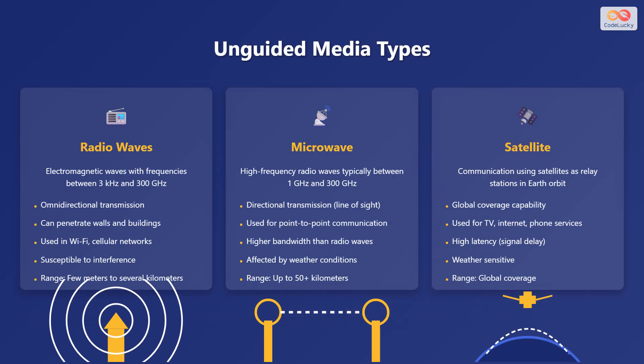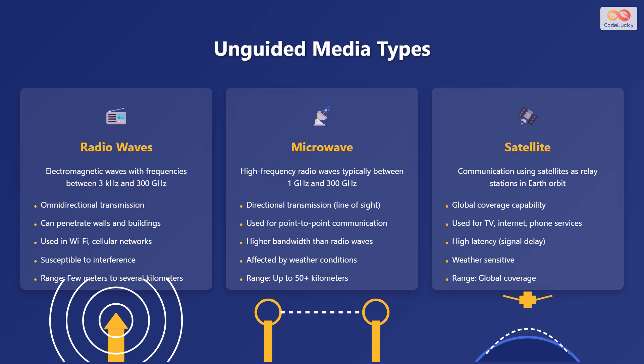Now let's shift our focus to unguided media types. Unguided media, also known as wireless media, transmits data signals through air or space without the use of physical cables. The primary types of unguided media are radio waves, microwave, and satellite communication. Radio waves are electromagnetic waves with frequencies between 3 kilohertz and 300 gigahertz. They offer omnidirectional transmission and can penetrate walls and buildings, making them suitable for Wi-Fi and cellular networks.